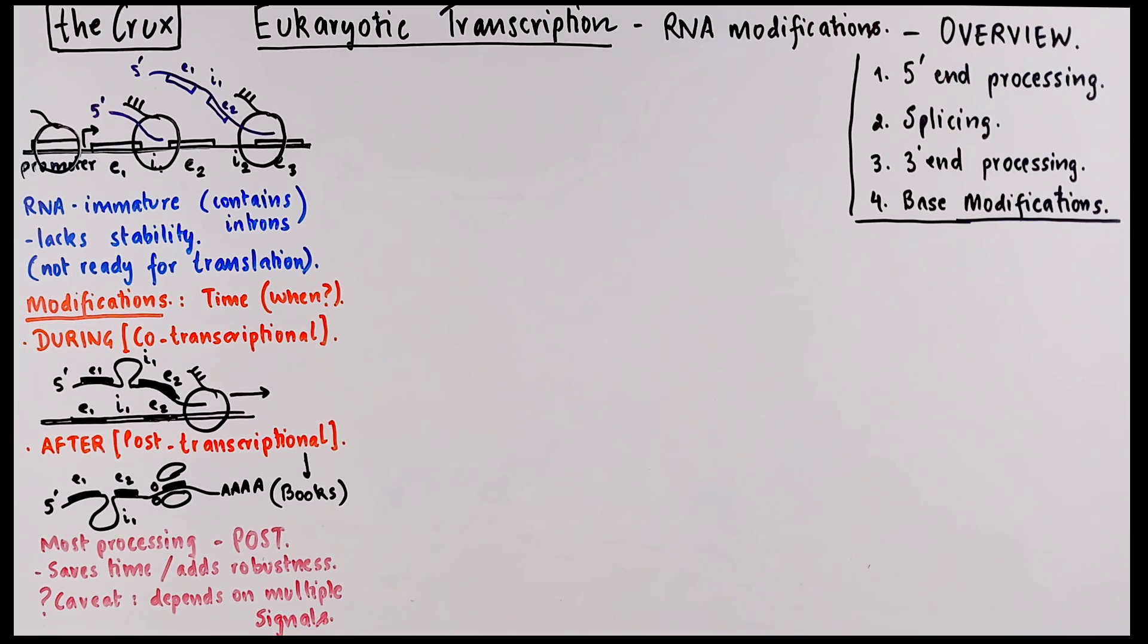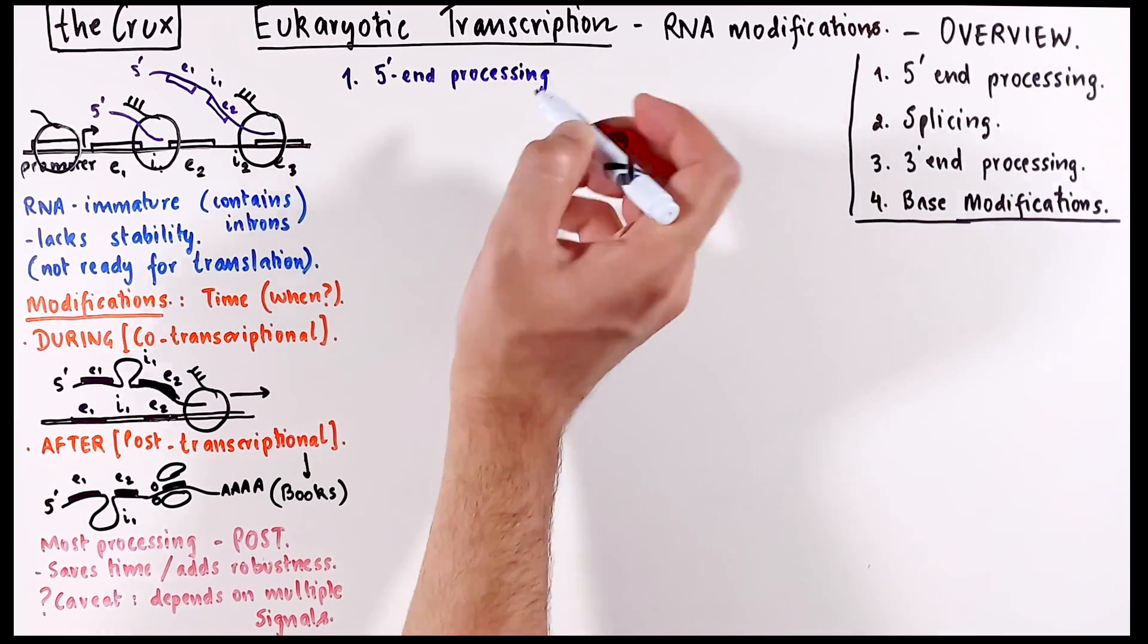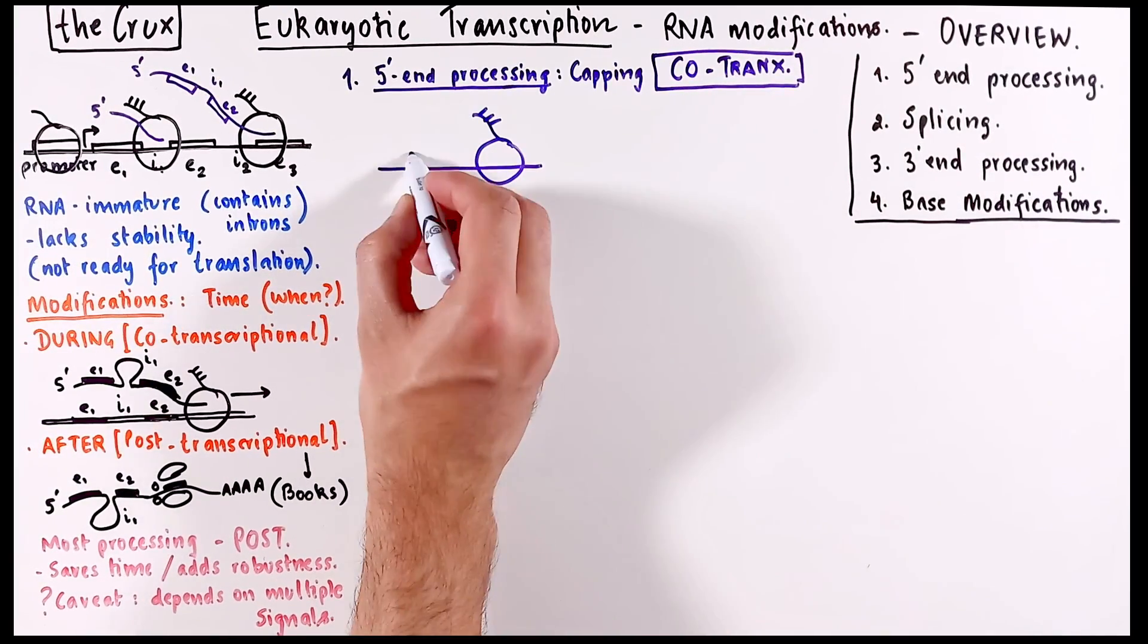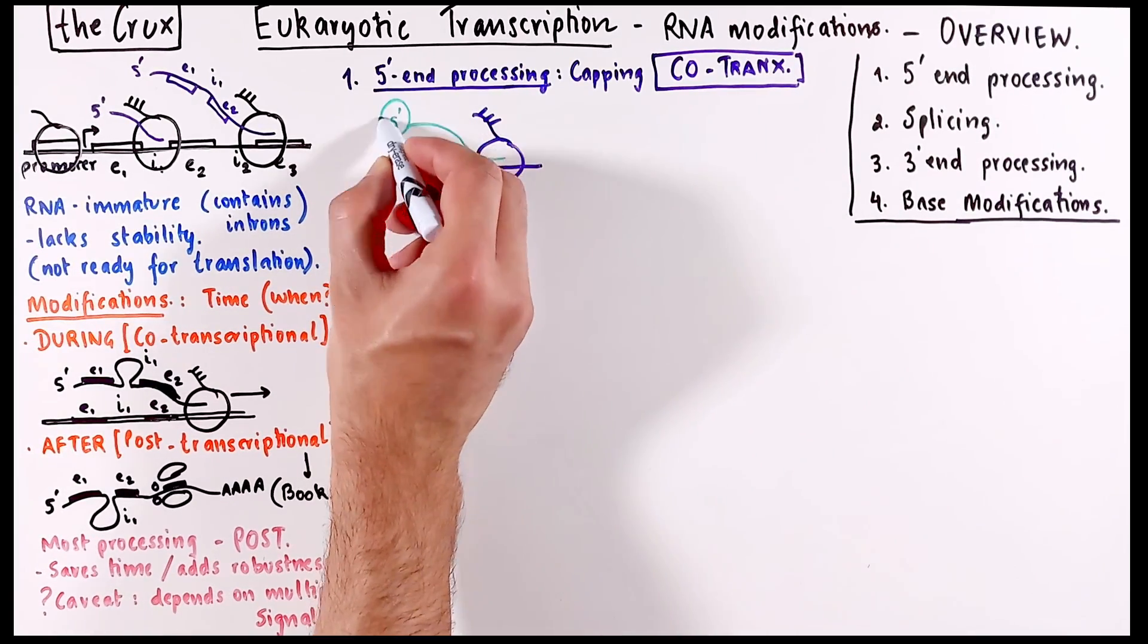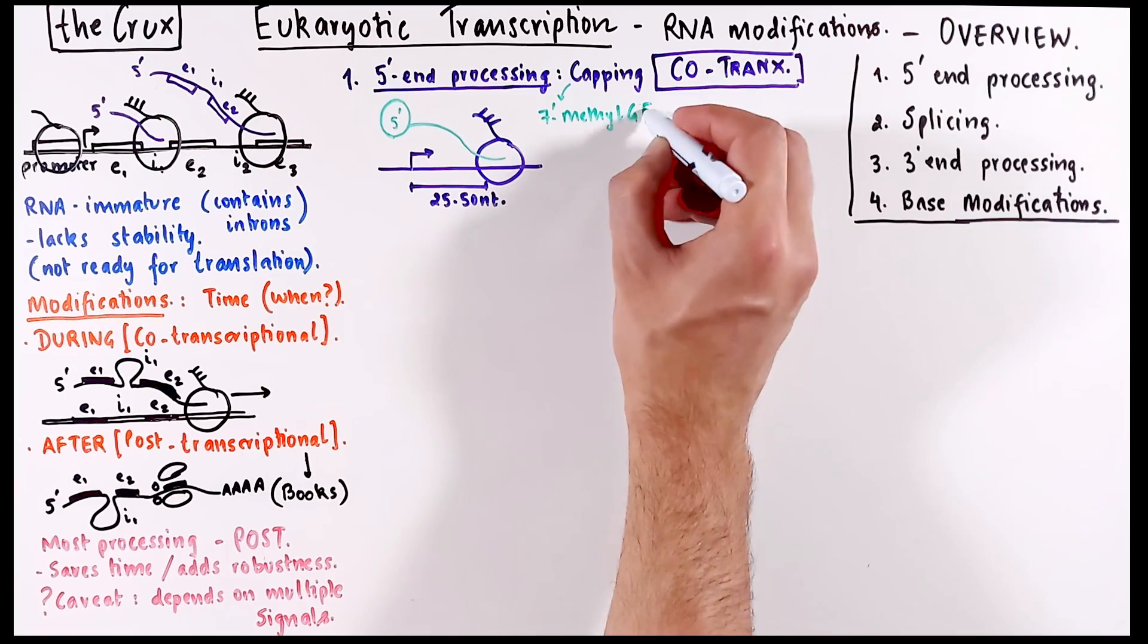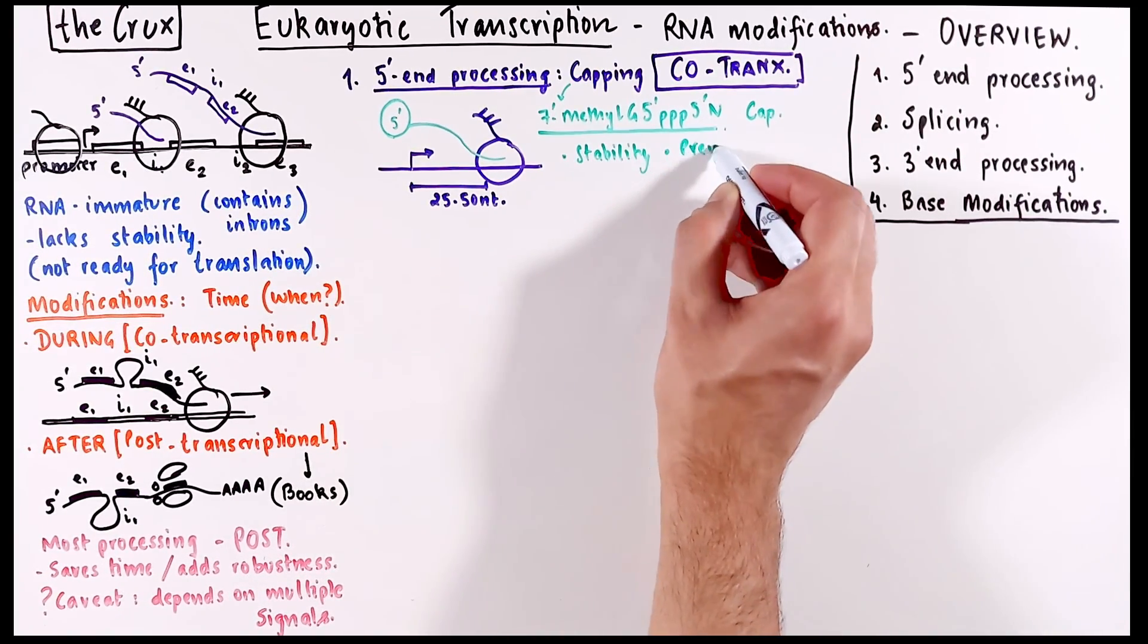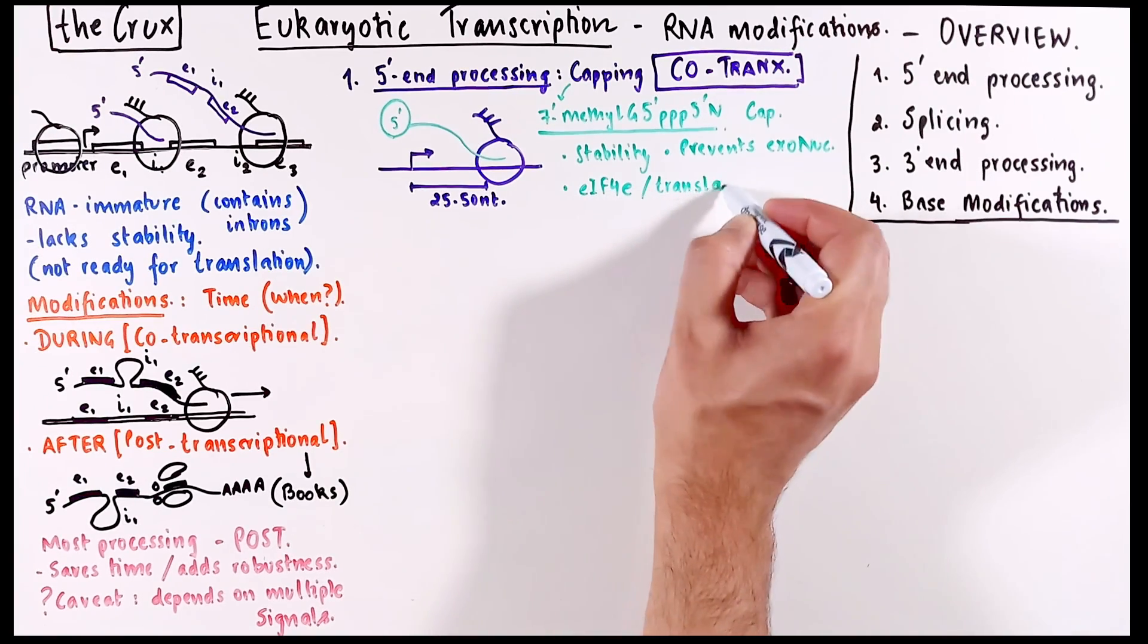Alright, so let's now talk about these modifications and see when they occur. The first one is the 5' end processing, which is also the 5' end capping, which is strictly speaking co-transcriptional in nature. In this modification, when the RNA polymerase has moved about 25 to 50 nucleotides in length, which is also at the same time the length of the transcribed RNA, the 5' end of this newly synthesized RNA gets a cap, which is essentially a chemical modification of 7-methylguanine-5-triphosphate. This sort of cap adds stability to the RNA and prevents it from exonuclease digestion. And it also aids in the translation by recruiting some translation initiation factors.